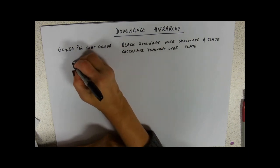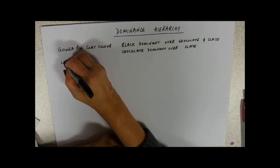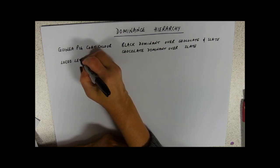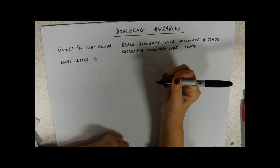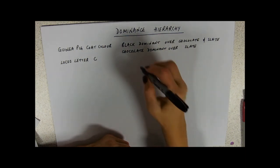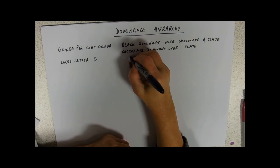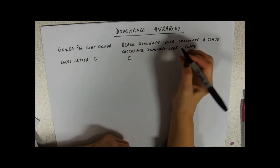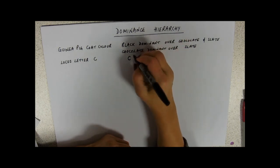So I'm going to give it a locus letter. So we're talking about coat color, so I'm going to give it the locus letter C. And we're dealing with multiple alleles. So I'm going to superscript those. So I'm going to go C B, it's black.